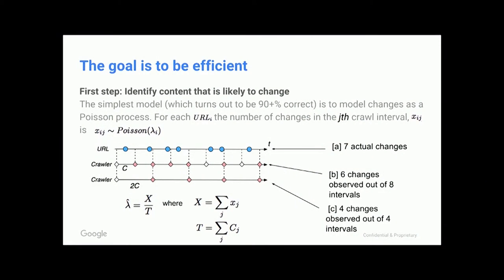The first step is to identify content that's likely to change. On the top line we have our URL — it's blue when the URL updates, and red when a crawler sees it. In the first line we have a crawler crawling at intervals 1c, then one crawling at intervals 2c, and you can see when it picks up changes. Because we don't know exactly when the page changed, we only know what we see. You can average the number of changes observed over time to get an estimate of how often the page changes.